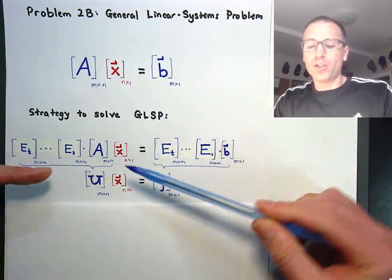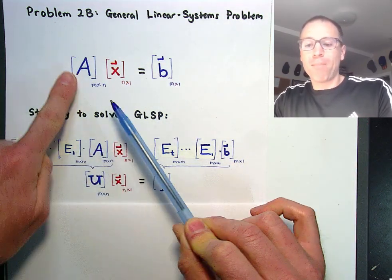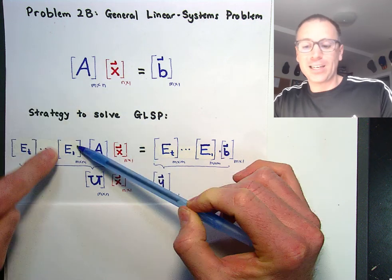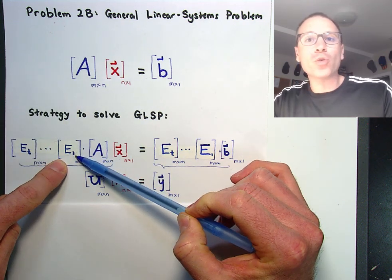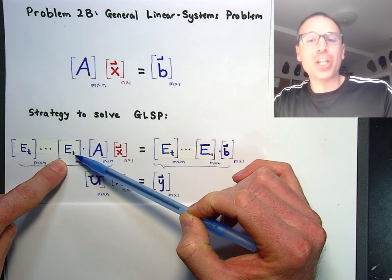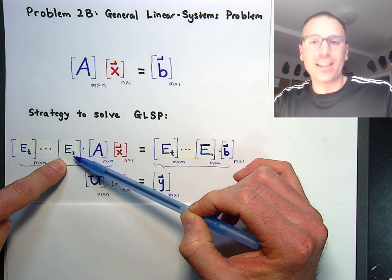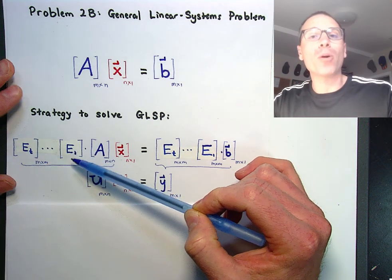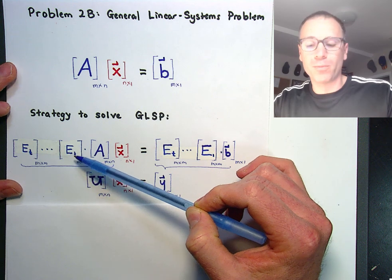Then what we're going to do is hit the matrix on the left-hand side with elementary row operations. So those may be shear matrices, dilation matrices, or permutation matrices, also known as transposition matrices.